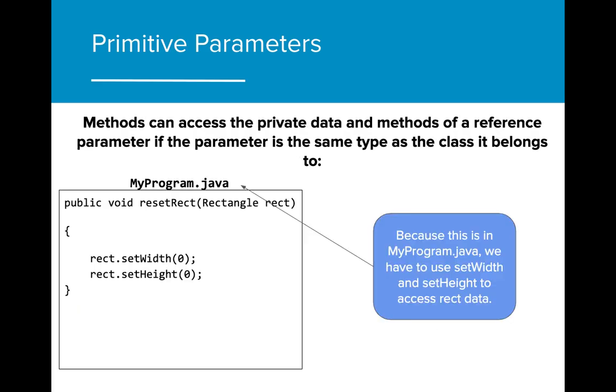If the formal parameter is a reference object, we can actually access the private data associated with that reference if the method has been written in the object's class file.